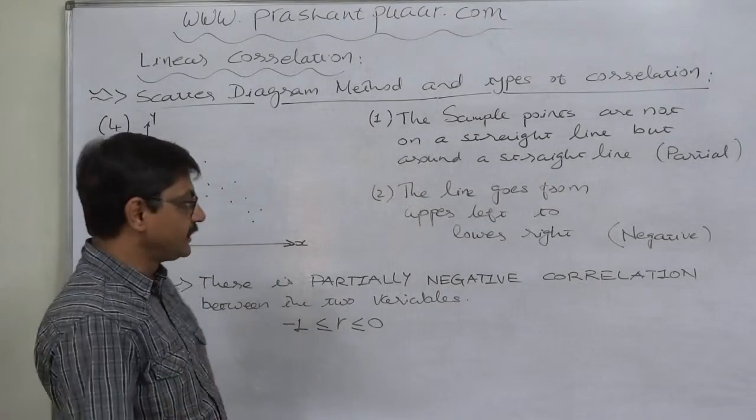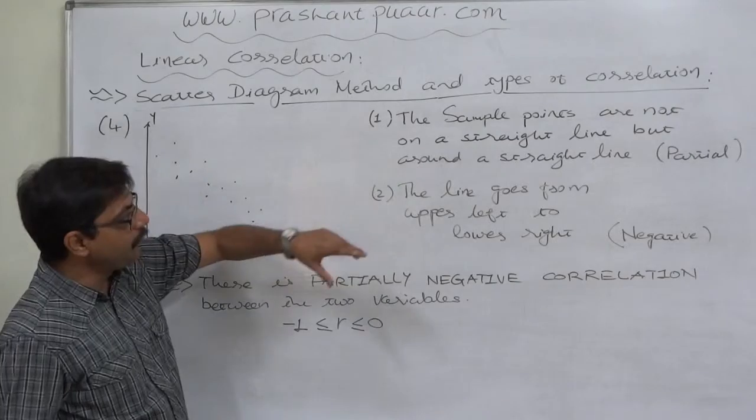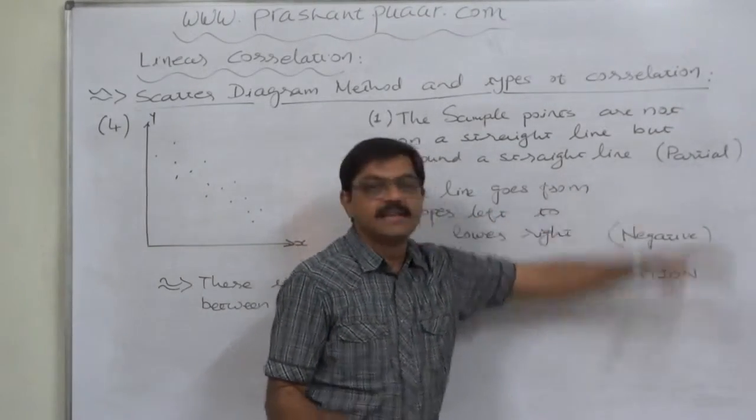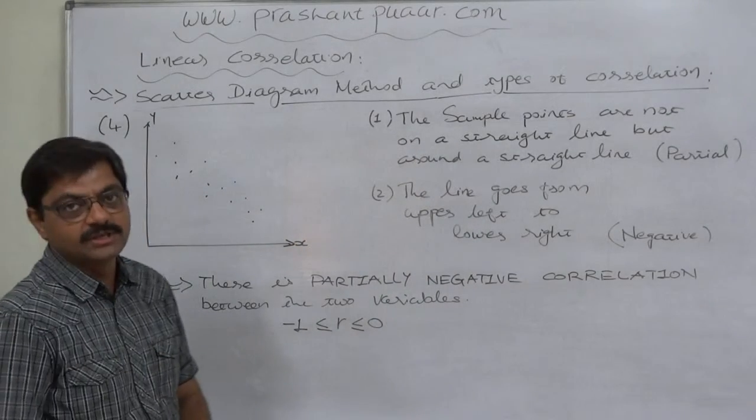Upper left to lower right shows negativity, and having the sample points not on a straight line but around a straight line suggests there is not a perfect but a partial relationship.